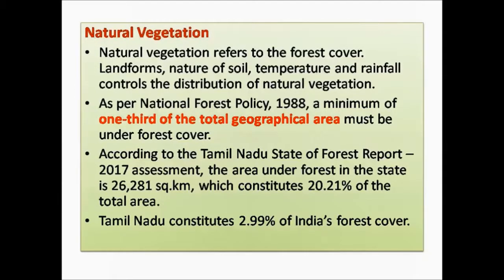According to the Tamil Nadu State of Forest Report 2017, the area under forest in Tamil Nadu is 26,281 km², which is about only 20.21% of the total area. The total forest cover of Tamil Nadu is very less when considering the forest cover of India. Tamil Nadu constitutes only 2.99% of India's total forest cover.